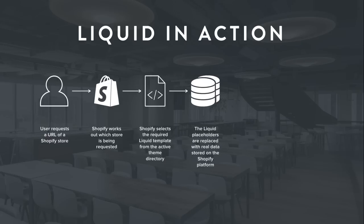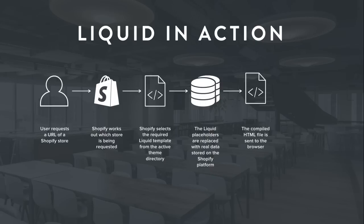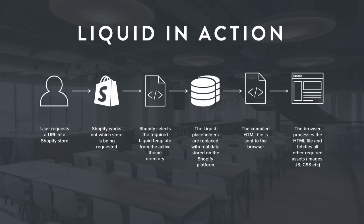Once it's worked out the template, it finds any Liquid placeholders — whether they be output or logic — and goes off to grab the data being requested for that particular store from the Shopify platform. The Liquid placeholders are then replaced with HTML. For example, if the template is requesting the name of the shop, the placeholder gets stripped out and the actual store name is injected as HTML in the compiled template, which is then sent to the browser. The browser then processes the HTML and fetches all other required assets such as images, JavaScript, and CSS.